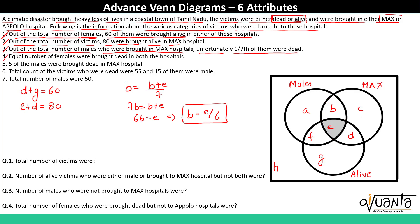The fourth statement: equal number of females were brought dead in both hospitals. Excluding the set of alive and the set of males, the females dead in Max hospital is region C, and the females dead in Apollo hospital is region H — which lies outside the set of males and outside the set of Max hospital. So C equals H.